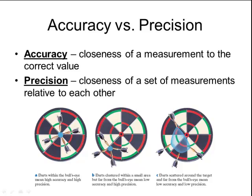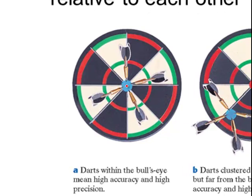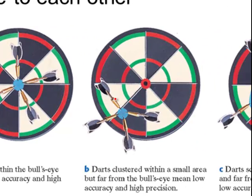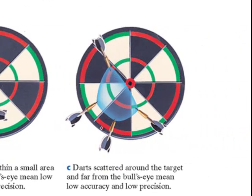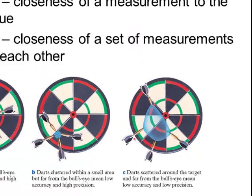Here's an analogy using a dartboard. On the left side, consider the bullseye to be the correct answer. All of these darts are hitting the bullseye and are very close to each other, so they have high accuracy and high precision. In the middle, these darts are not hitting the bullseye so they are not very accurate, but they are very close to each other so they are very precise. On the far right, these darts are all over the place — not accurate because they are not near the bullseye, and not precise because they are not close relative to each other.